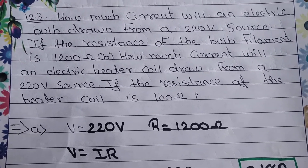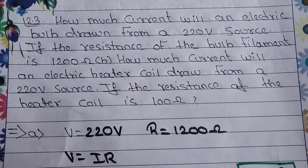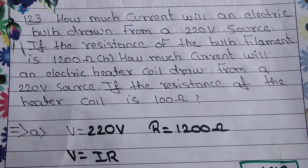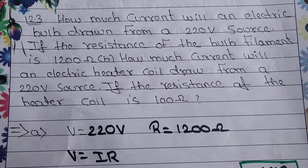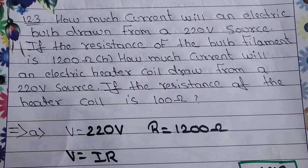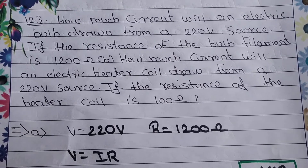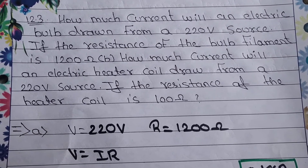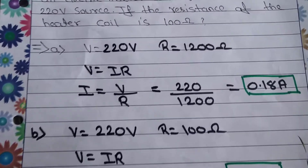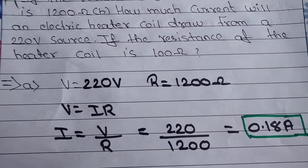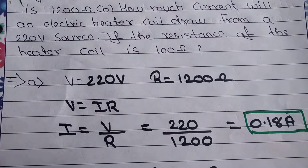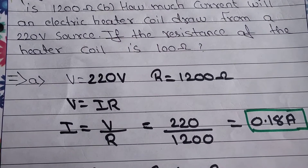We will cover this question in two parts. First we will solve A, then we will solve B. In part A, we have to find current. The voltage given is 220 V and the value of R is 1200 ohm. So let's see what is given: V equals 220 volt and R equals 1200.